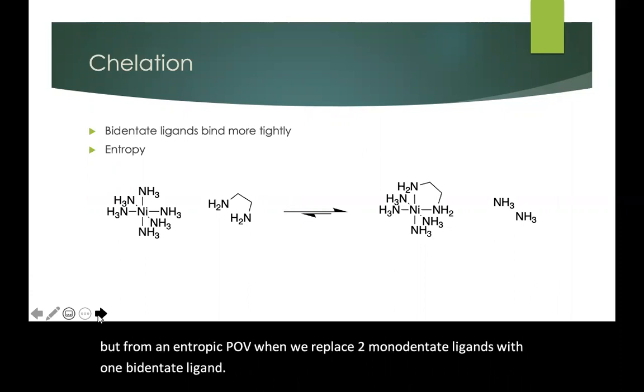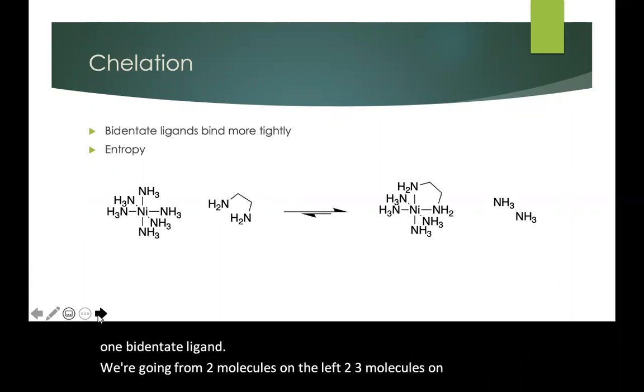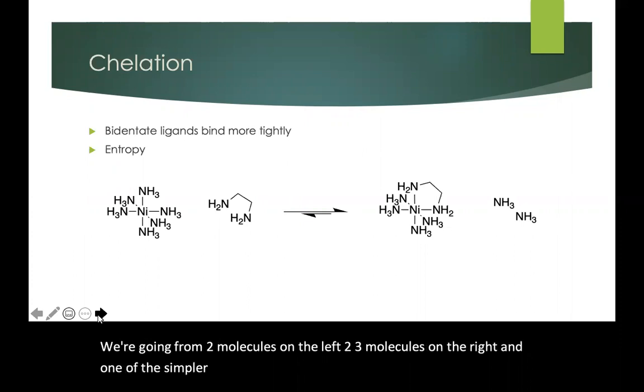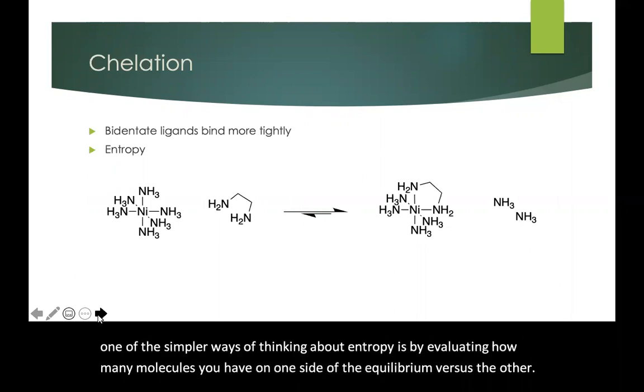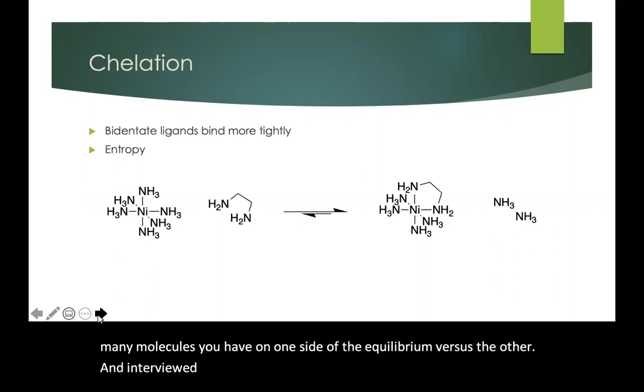we're going from two molecules on the left to three molecules on the right, and one of the simpler ways of thinking about entropy is by evaluating how many molecules you have on one side of the equilibrium versus the other, and entropy drives towards the greater number of molecules.